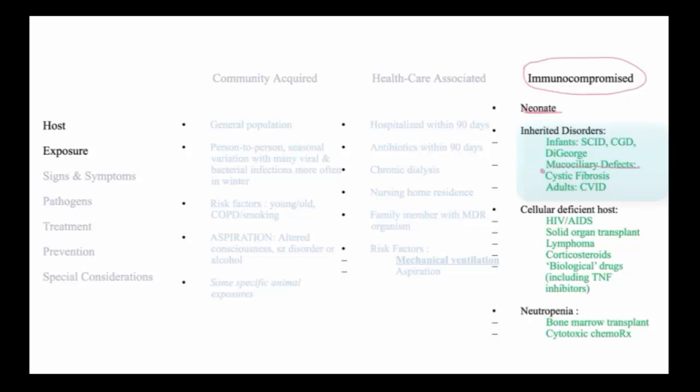But the largest group of immune-deficient individuals are those with cellular deficiencies, including HIV, organ transplantation, or other immunosuppressive drugs, and neutropenic hosts who are receiving cytotoxic chemotherapy.